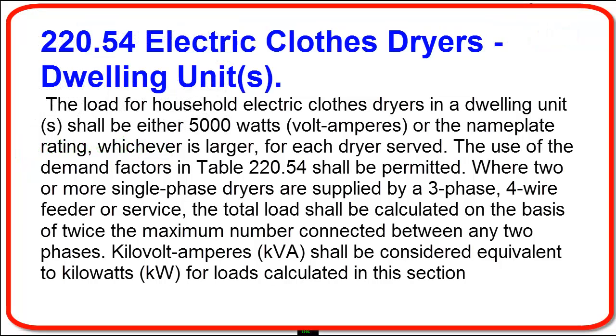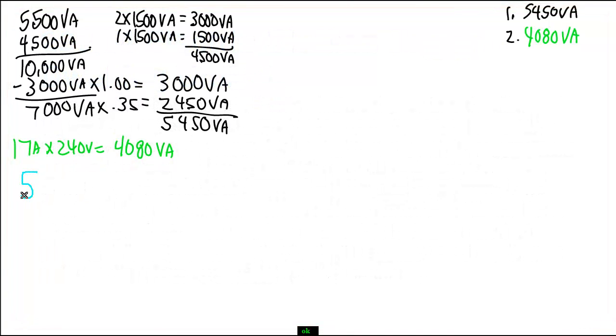In 220.54, we find that the code tells us that for a dwelling unit dryer, it will have to be either 5,000 watts or volt amps or the nameplate rating, whichever is larger. Well, normally a dryer will run around 4,500 watts or 4,500 VA. So in this case, 5,000 watts would be greater. So what we need to do here is we need to use 5,000 watts. So for our dryer, we're at 5,000 VA.